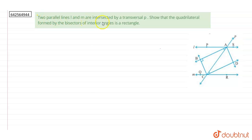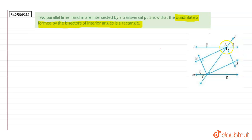Two parallel lines L and M are intersected by a transversal P. Show that the quadrilateral formed by the bisectors of interior angles is a rectangle. What is given is that we have two parallel lines L and M intersected by transversal P, and we have interior angles PAC, angle QCA, SAC, and RCA. We have to prove that the bisectors of these interior angles form a rectangle.